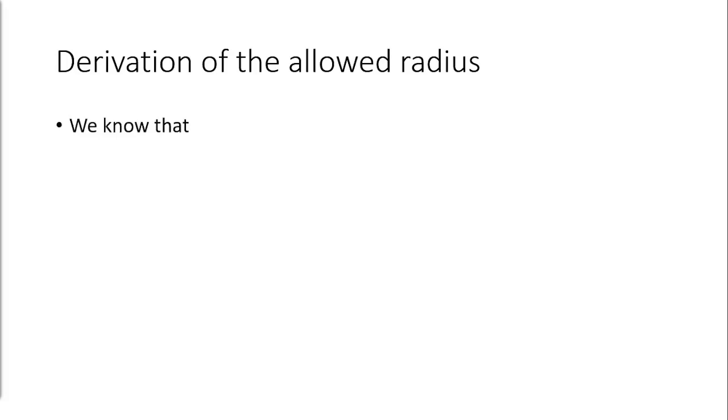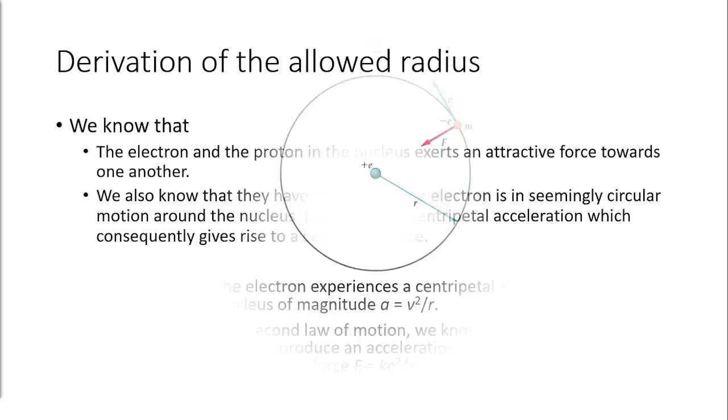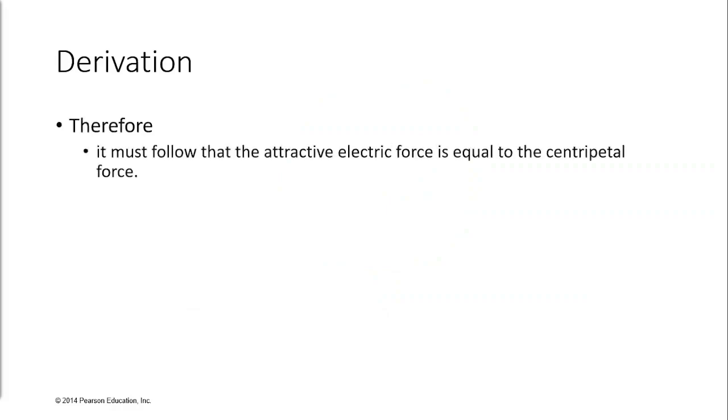We now proceed to the derivation of Bohr formula for the stable orbit of the hydrogen atom. We know that the electron and the proton in the nucleus exerts an attractive force towards one another. We also know that they have masses and the electron is in seemingly circular motion around the nucleus, hence it has a centripetal acceleration which consequently gives rise to a centripetal force. Therefore, it must follow that the attractive electric force is equal to the centripetal force.